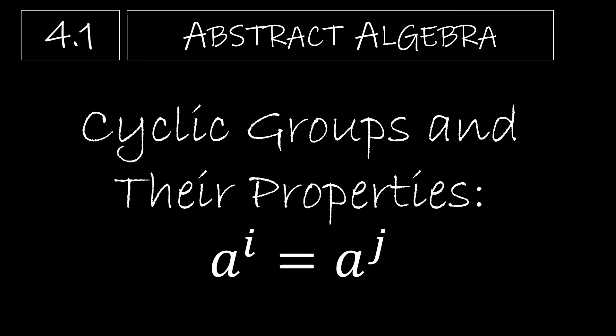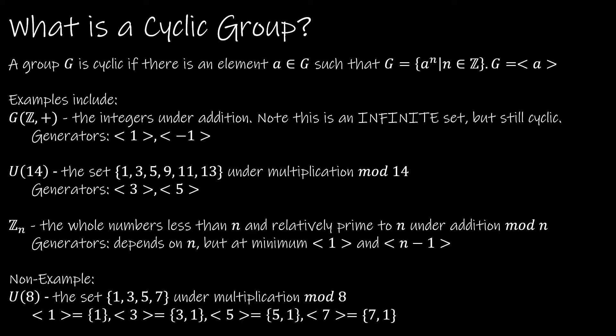For this first video we're going to look at the property that A to the i is equal to A to the j. Before we dive into that property, let's just remind ourselves what is a cyclic group. A group is considered cyclic if there's an element A in our group such that if we take A to the n for all powers of n in the integers, we are going to generate the entire set. One way we denote that is that G, the group itself, is equal to the cyclic subgroup generated by A.